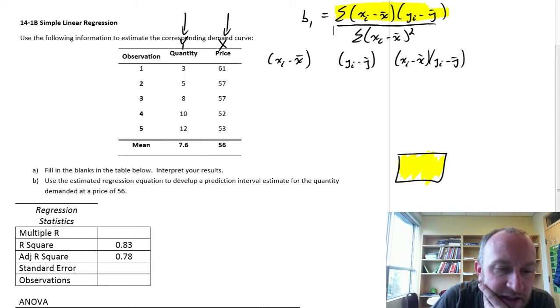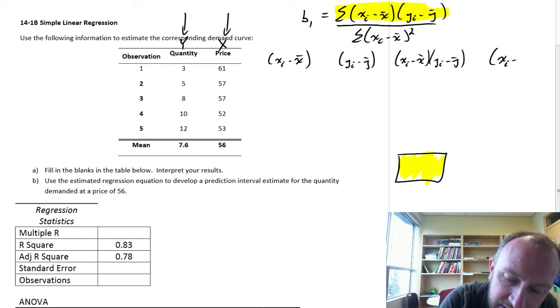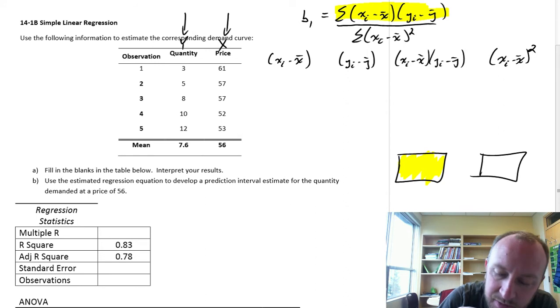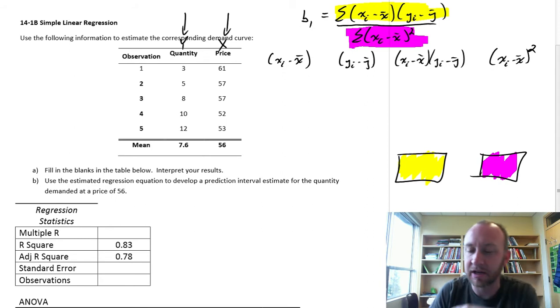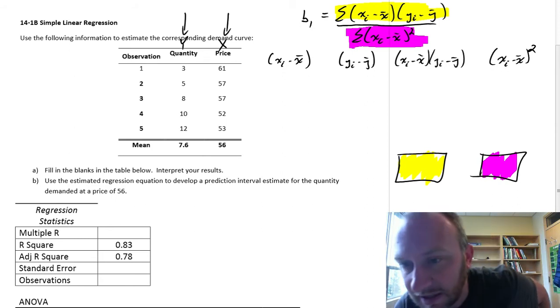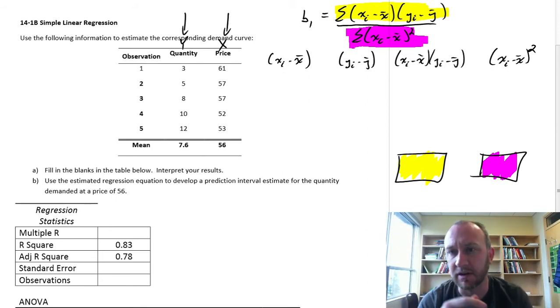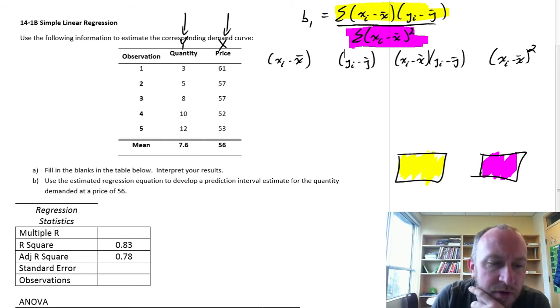Then finally we'll square that first column, so this will be xi minus x bar squared, and add those up. That will give us our denominator. It's as simple as taking a ratio of those two, and we'll have our slope coefficient. Then from that, we can figure out our y-intercept.